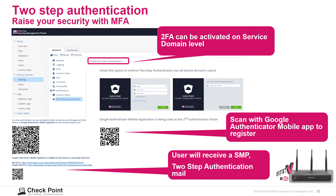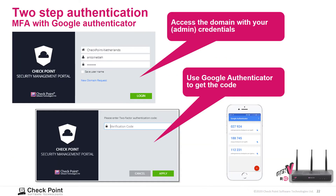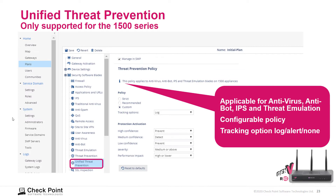Two-step authentication: we can use multi-factor or two-factor authentication, activated at the service domain level. Once the QR code is generated, we scan it with the Google Authenticator mobile app to register. The user will receive a two-step authentication email for the SMP, and upon logging in, you add your admin credentials followed by the one-time code from the app.